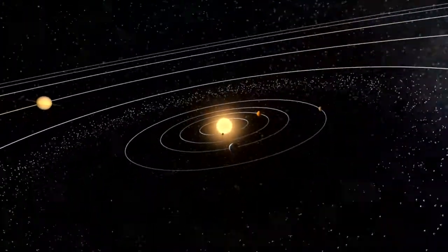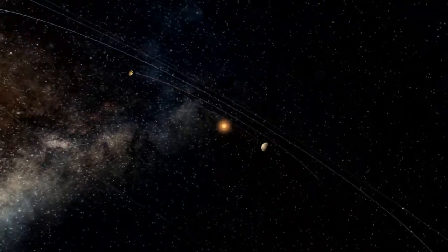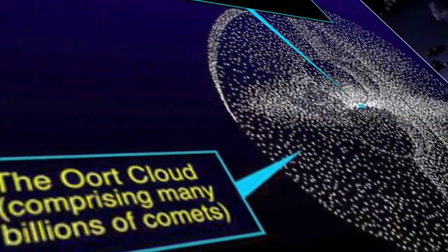Far beyond the orbit of Neptune, at the gravitational fringes of our solar system, sits a vast field of icy debris known as the Oort Cloud.